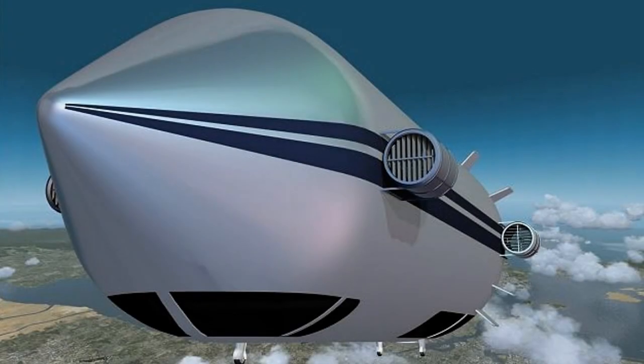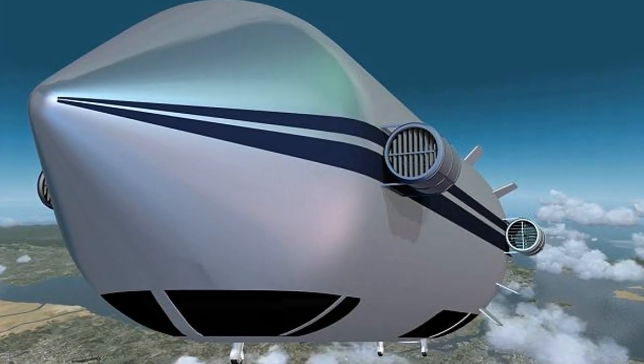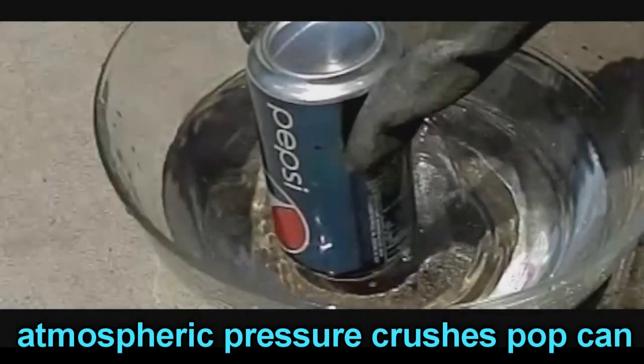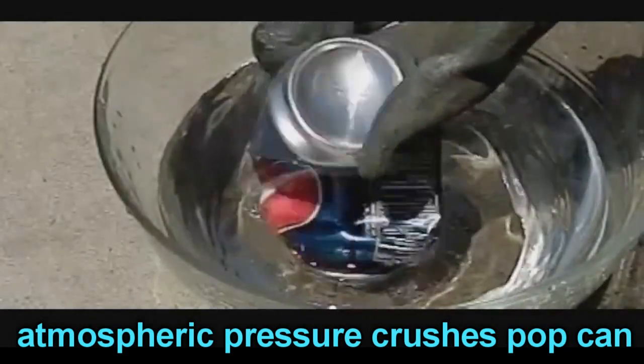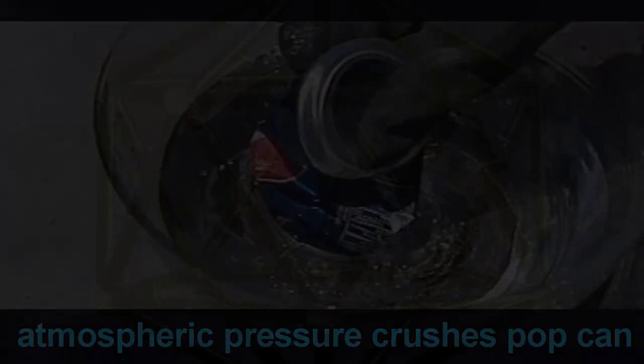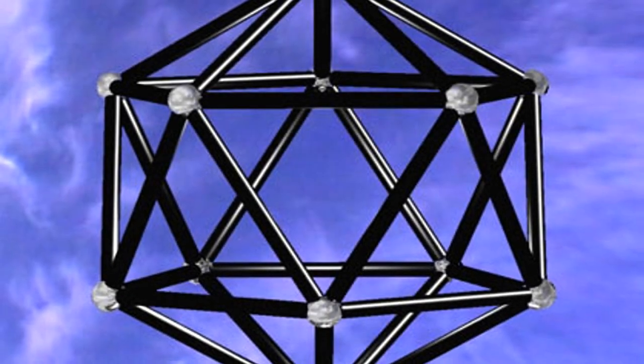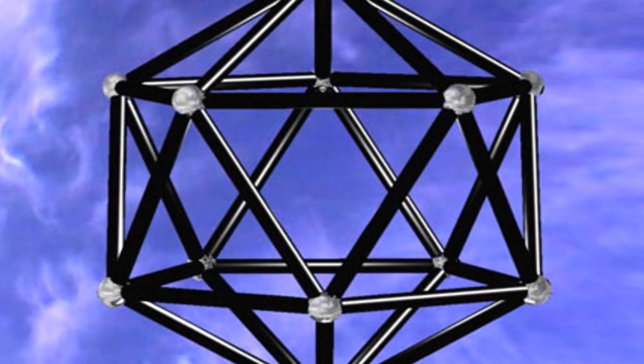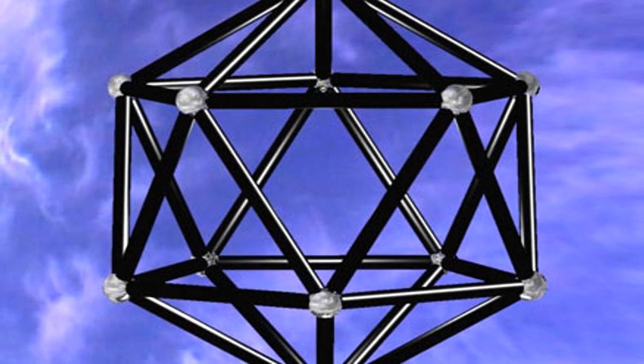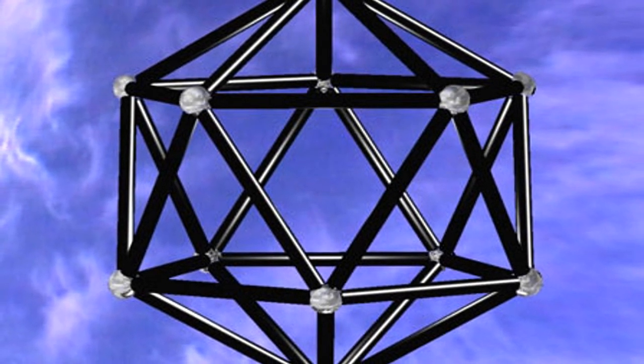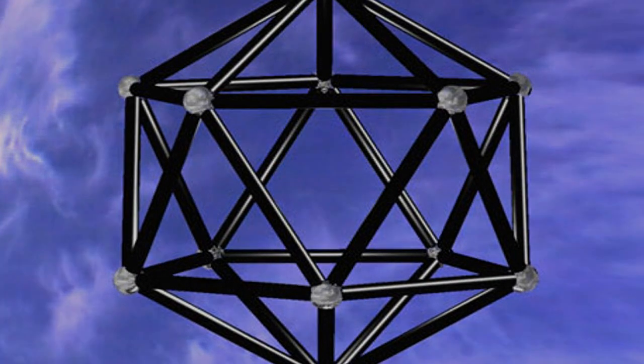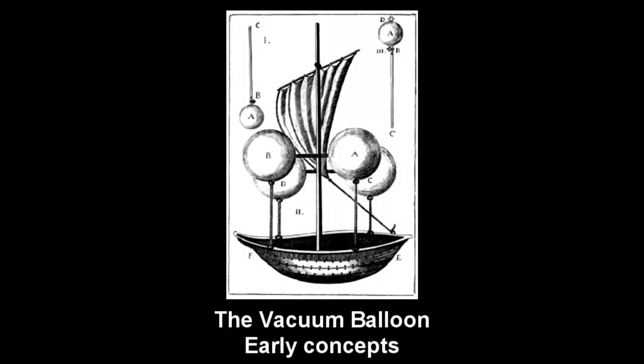So why don't we have vacuum airships? Well, there's just one tiny problem with vacuum-containing structures, and that's that they tend to get crushed by the atmosphere. But if you can build a vacuum container that weighs on average less than one gram per liter of its volume, then you would have a vacuum balloon. A balloon that would float on literally nothing.